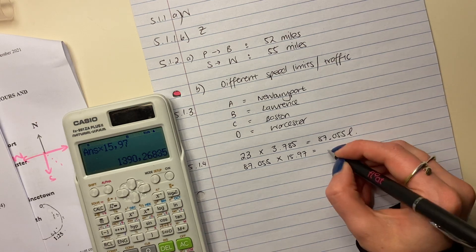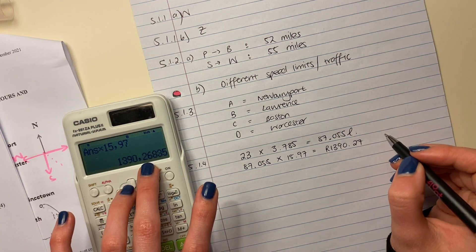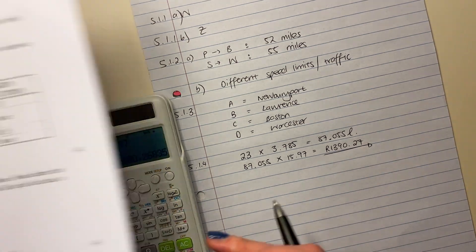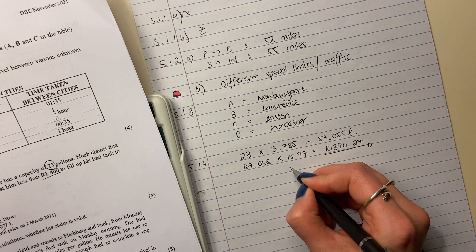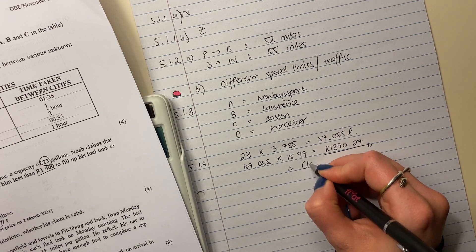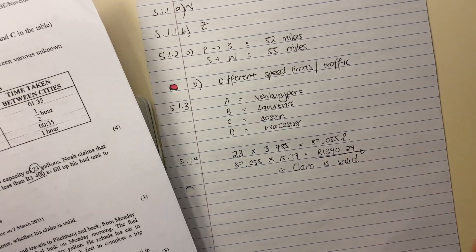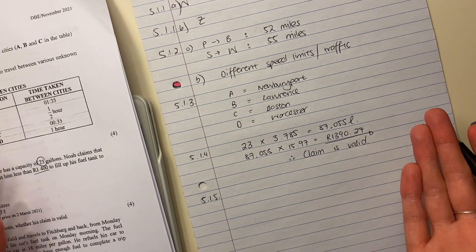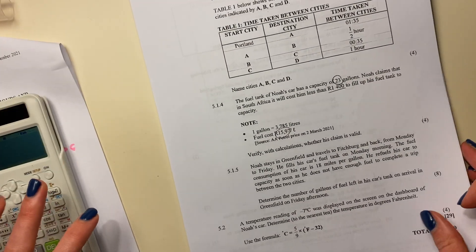That gives you the total cost to fill up. Round it off to two decimal places — the third decimal is 8, which is above 5, so you round up — giving R1390.27. But we're not done, because the question says verify whether his claim is valid. His claim was that it would cost less than R1400 rand. It is less than R1400 — it's R1390.27 — so the claim is valid. Don't forget to write this; you get a mark for that and students always forget.